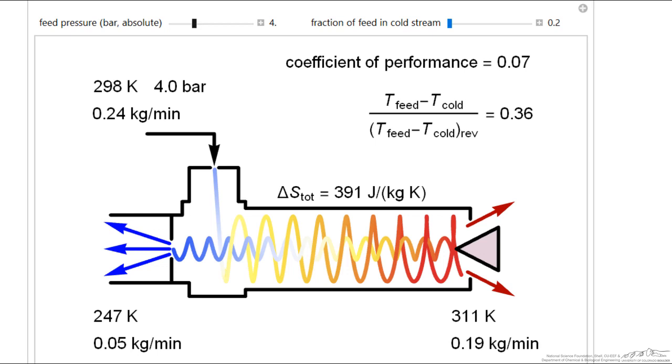Now if we were to increase the feed pressure, we can get an even colder temperature. So you can see here we're getting a 71 degrees Kelvin drop in temperature if 20% of the gas is leaving as cold gas, and we have a feed pressure of 7.8 bar.